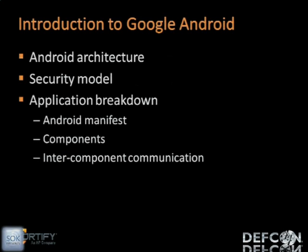In terms of introduction to Google Android, we're going to discuss architecture, security model, and application breakdown — basically the Android manifest, which is a configuration file that comes with every Android application, components of an Android application, and also inter-component communication.